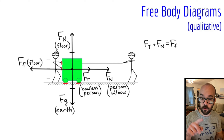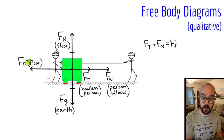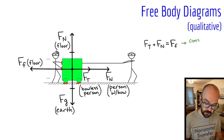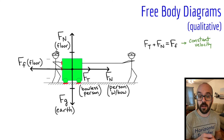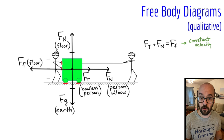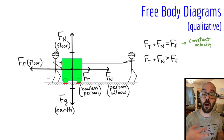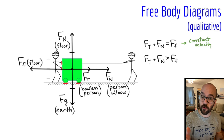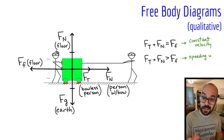What would be true if the tension force plus the normal force — the two rightward forces — add up to equal the leftward force of friction? Well, the forces horizontally would be balanced, and if forces are balanced the velocity is constant. So the two forces the people are exerting on the cart exactly balance out the friction, giving a constant velocity forward. Now what if their forces are greater than friction? The rightward forces are greater than the leftward force, and since the cart is moving to the right, the object is going to be speeding up.